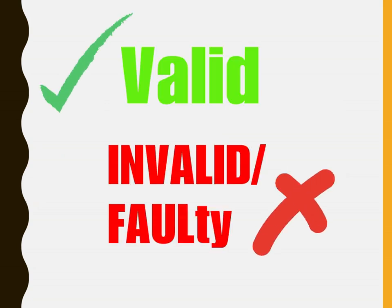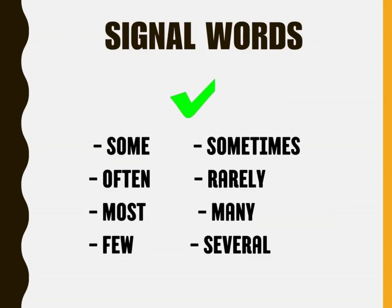Generalizations can be valid or invalid. Generalizations are considered valid and acceptable when they use the following signal words: some, sometimes, often, rarely, most, many, few, several.